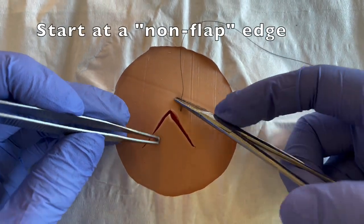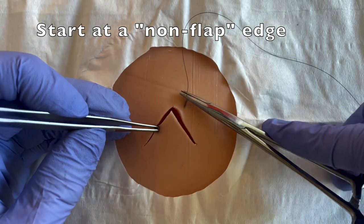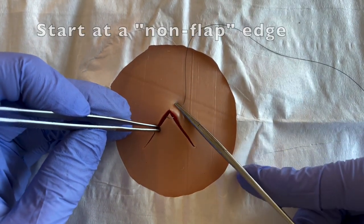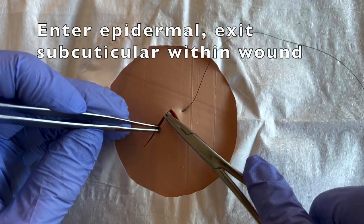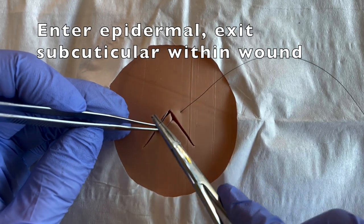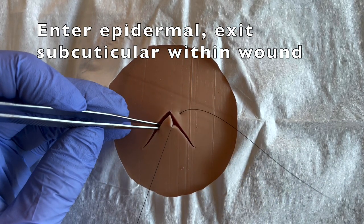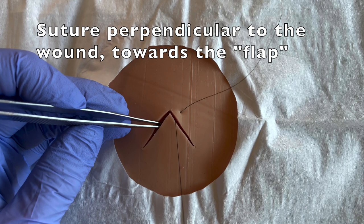Your first step in performing this technique will be to start at a non-flap edge of the wound and you're going to suture epidermal to subdermal, suturing perpendicular to the wound towards that flap edge.